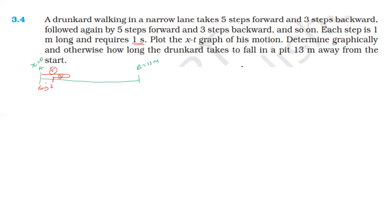So 2 meters forward per 8-second cycle. After 5 steps forward and 3 steps backward — 5 seconds forward, 3 seconds backward — the total is 8 seconds, with a net gain of 2 meters each cycle.